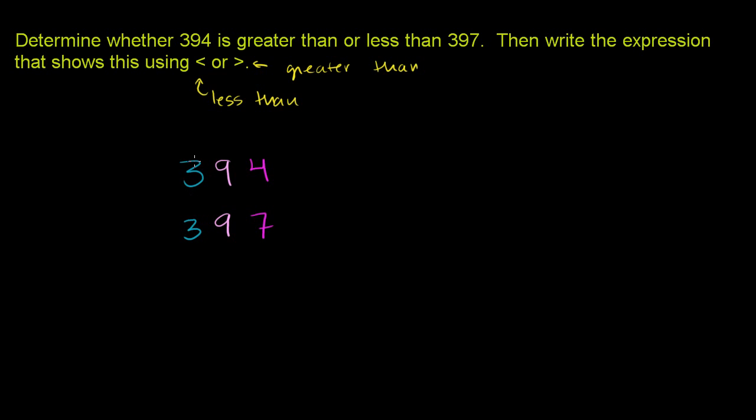Now, they both have 300s, so their hundreds places are equivalent. They both have 90, with that 9 there. But this is 300 plus 90 plus 4, and this is 300 plus 90 plus 7. We know that 4 is less than 7.